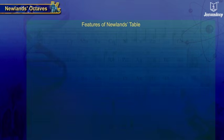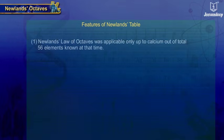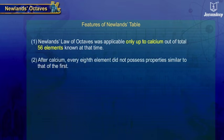Some features of Newlands' Table: 1. Newlands' Law of Octaves was applicable only up to Calcium out of the total 56 elements known at that time. 2. After Calcium, every 8th element did not possess properties similar to that of the first.